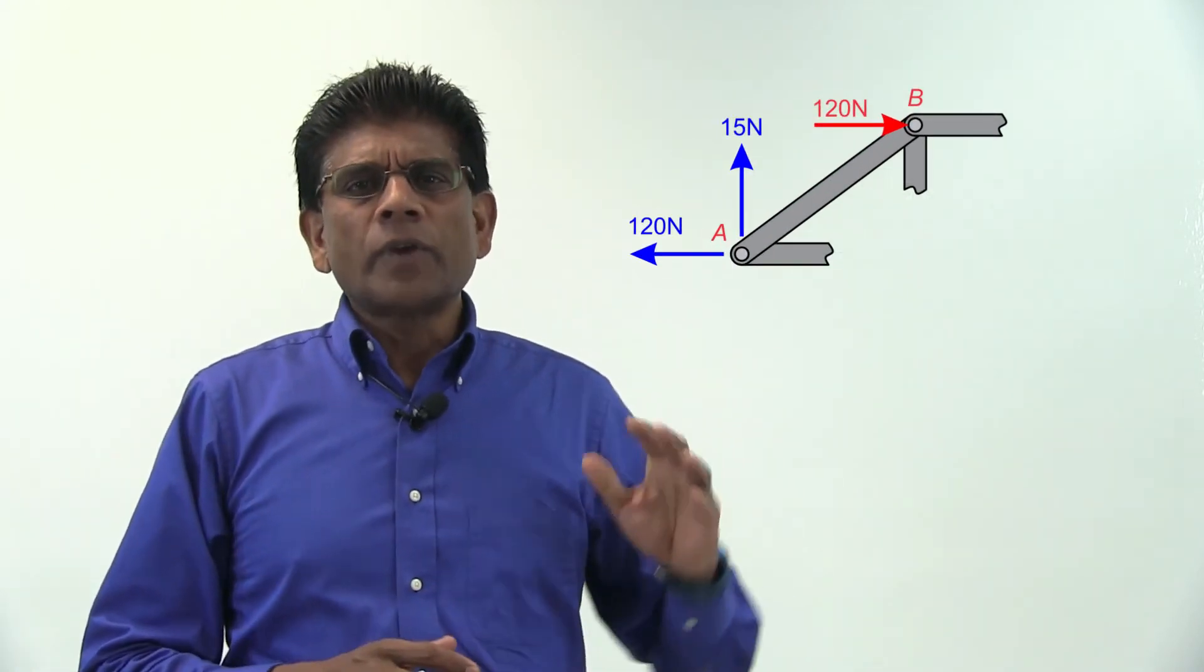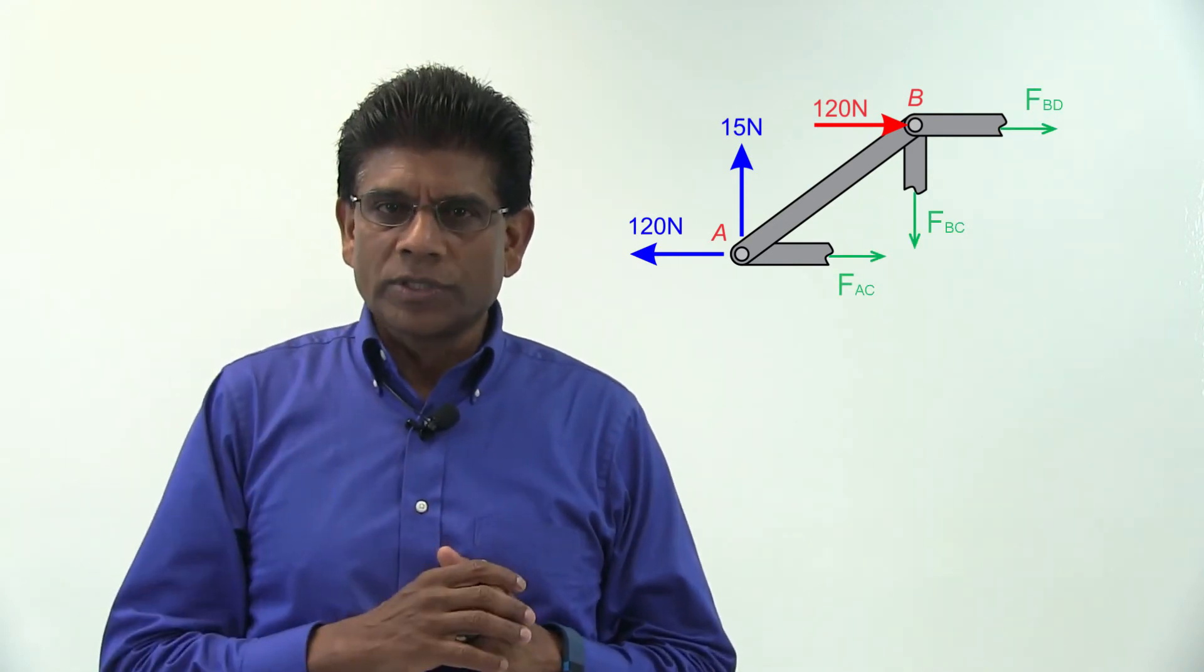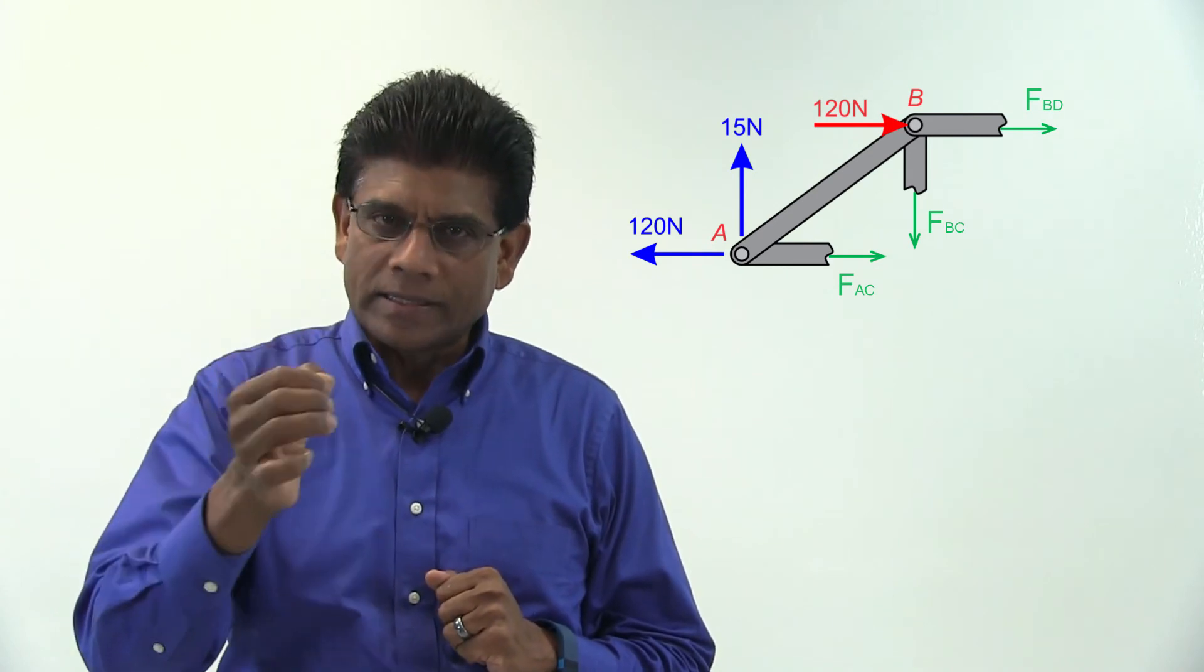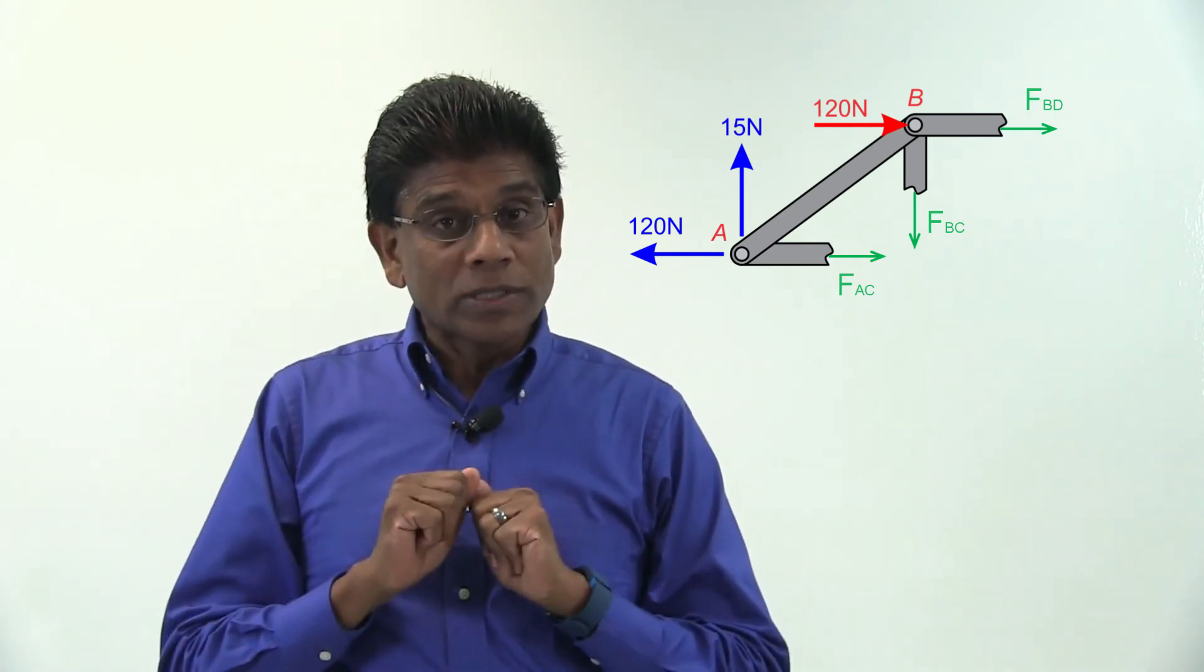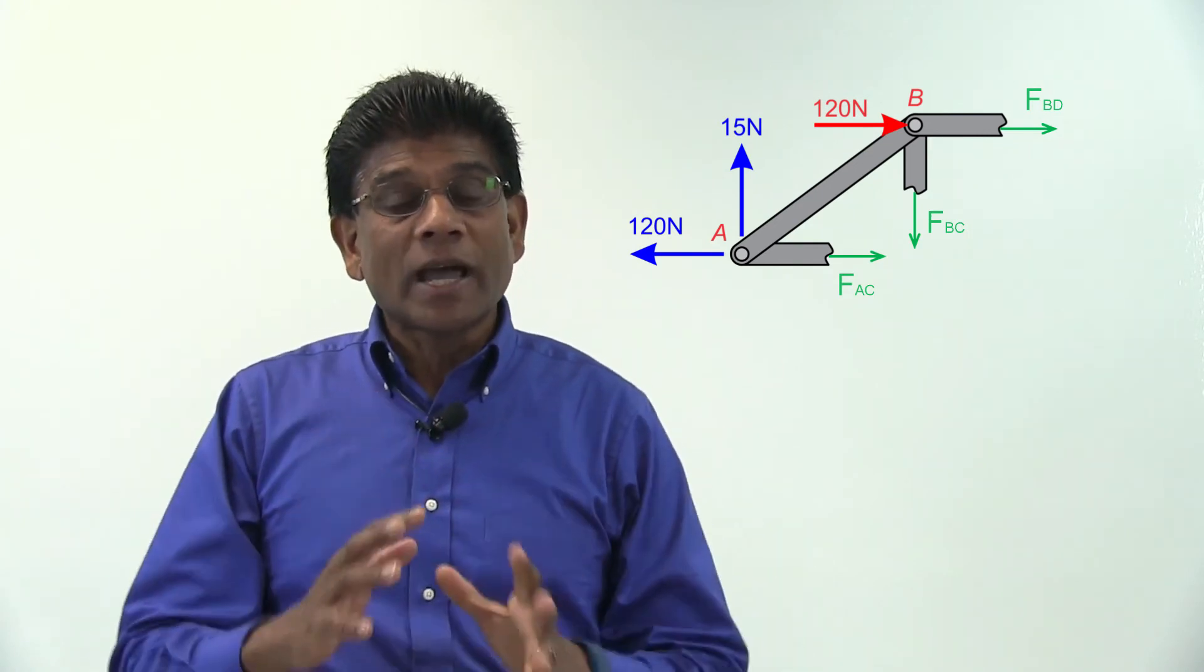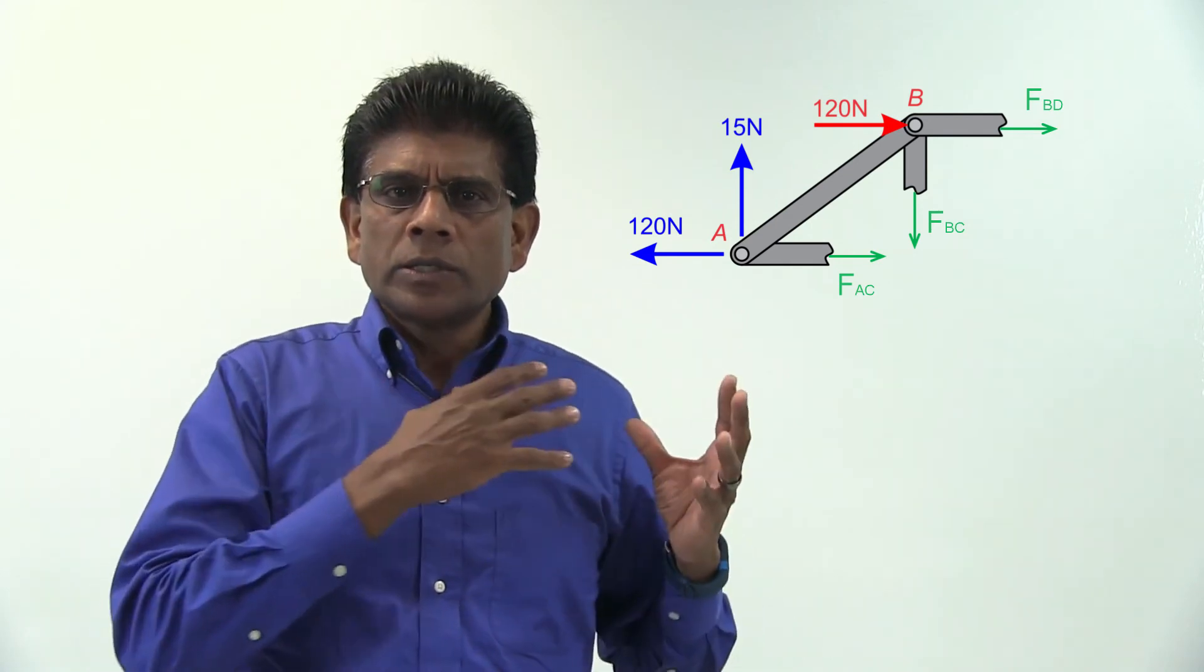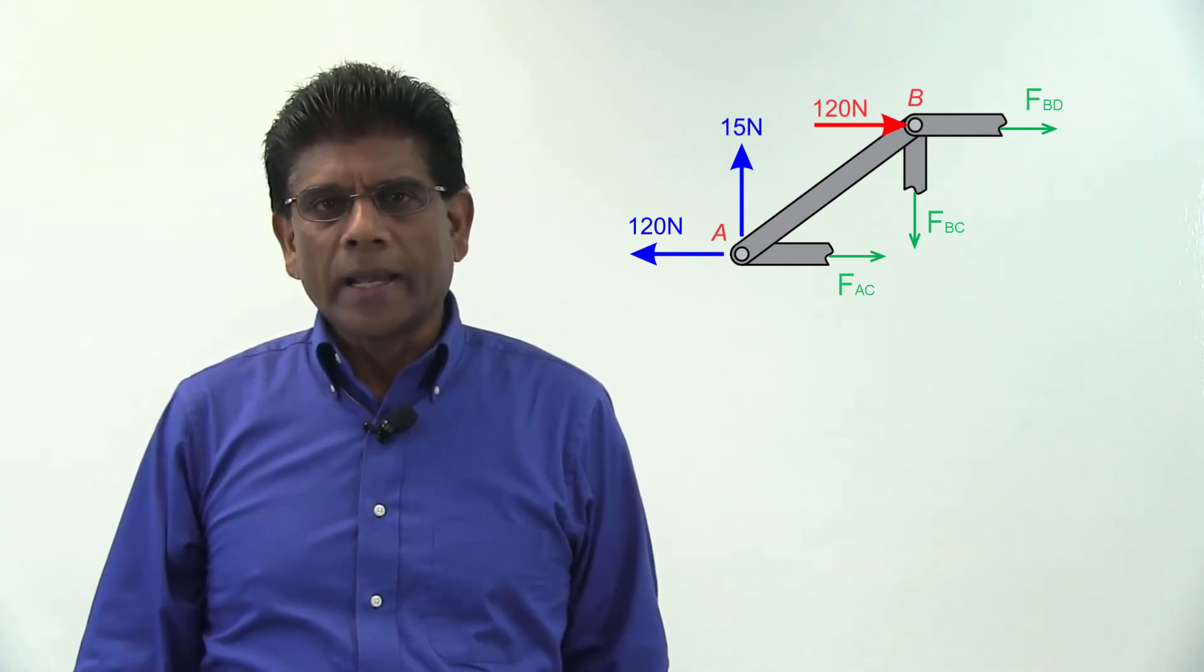Take a look at the free body diagram of this section. There are three unknown forces, member forces BD, BC, and AC. Although I can figure out the directions of these forces, I don't want to waste my time doing that. I am going to assume that all members in this structure are in tension as shown in this free body diagram.